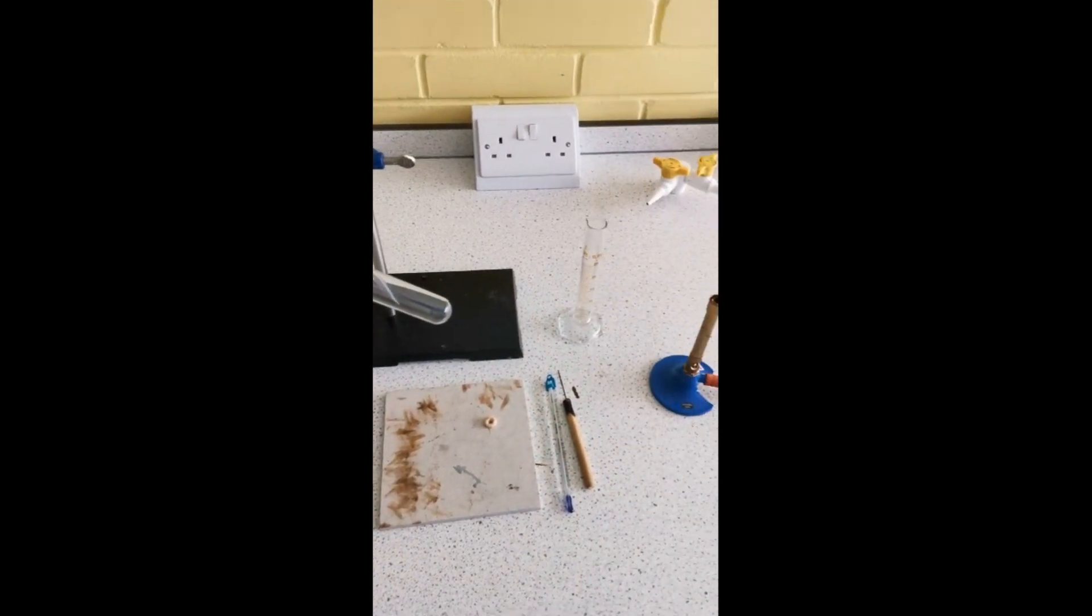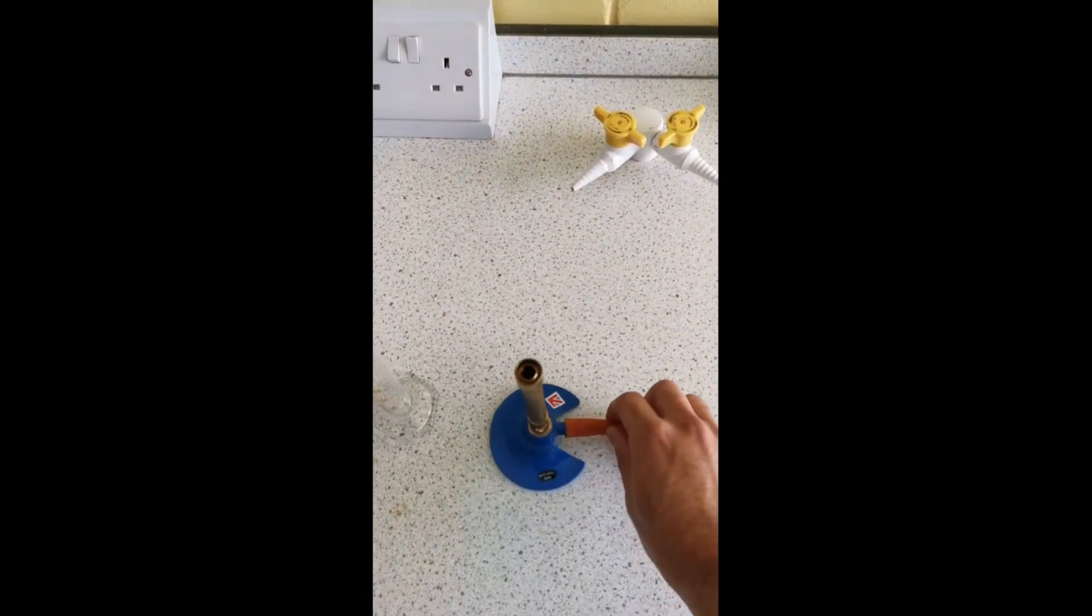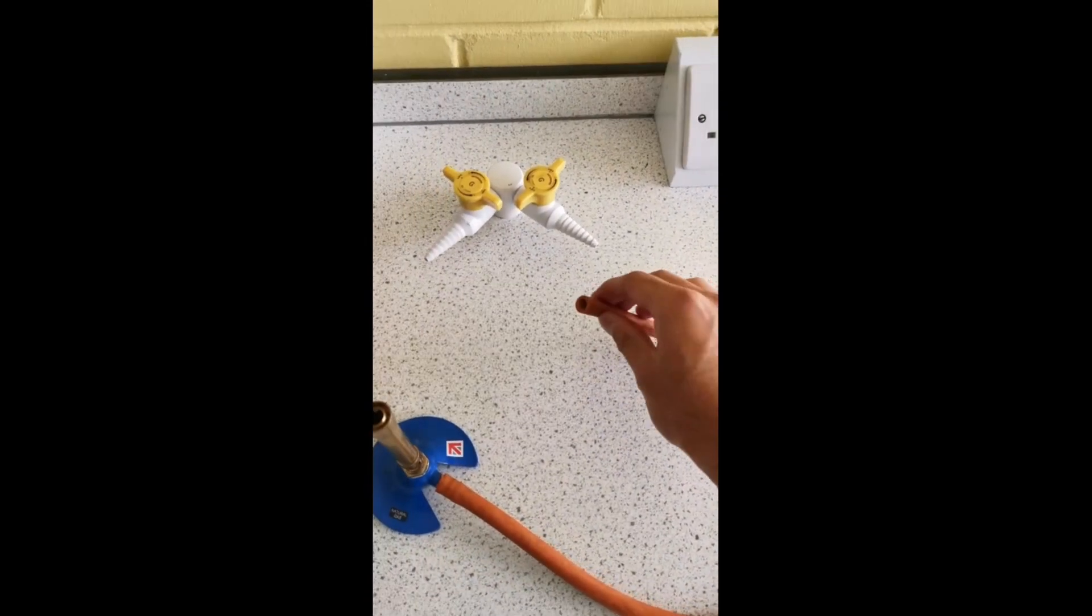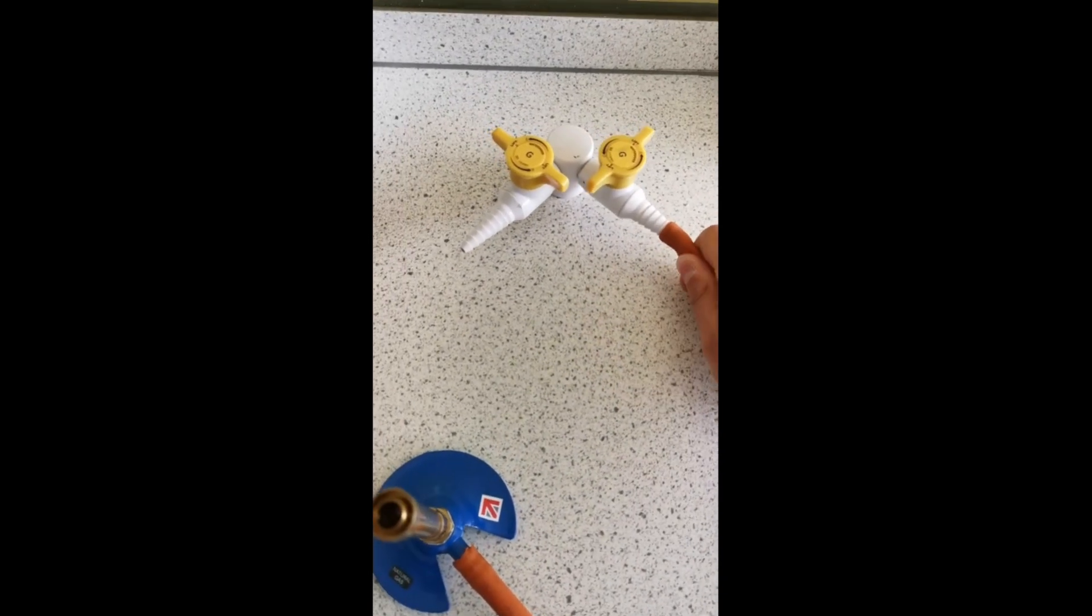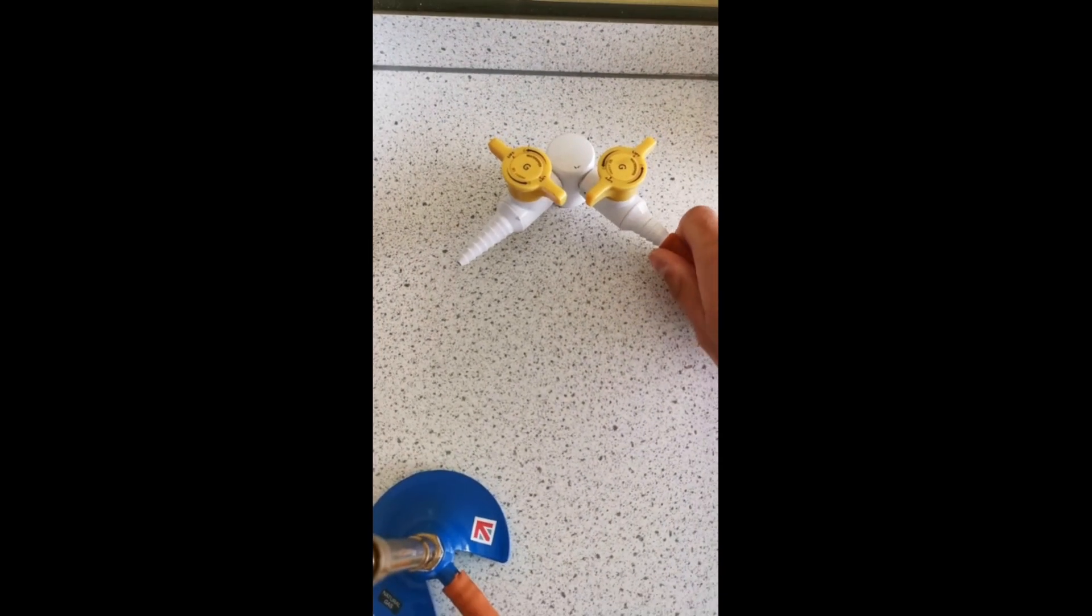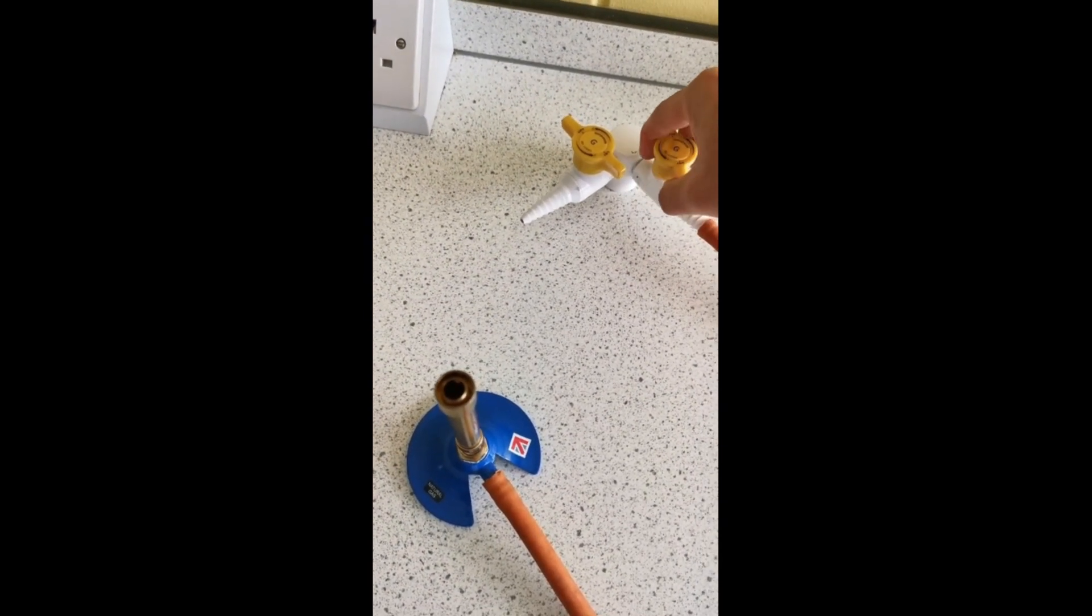All right, so this is the equipment you need to do the burning food practical. When you're setting up your Bunsen burner, it's very important that this hose goes onto the gas tap. Make sure you push it firmly on and that it's not loose. To turn on the gas, you lift this up and twist it.